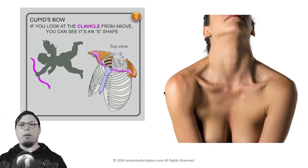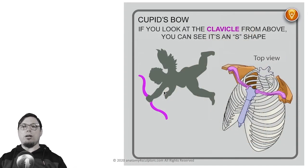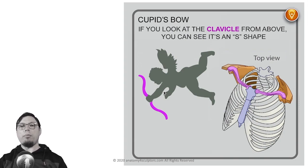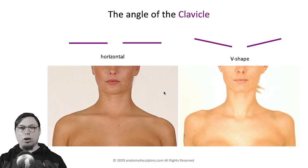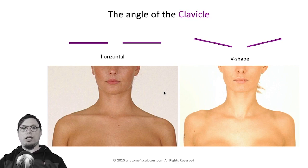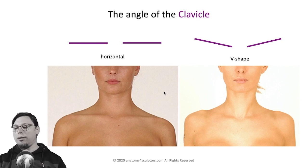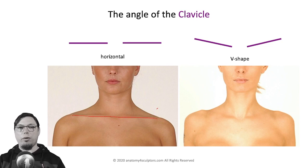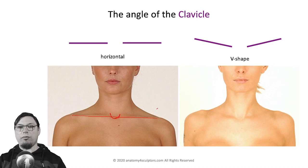If you look from above, you can see that both clavicles together with the manubrium — the upper part of the sternum — create a shape somewhat like a bow, called the cupid's bow. But if you look at the clavicle from the front, it appears straight without an S-shape. Together, both clavicles create almost a perfectly straight line, though the neck area breaks this shape slightly and the lateral ends are visible at the sides.